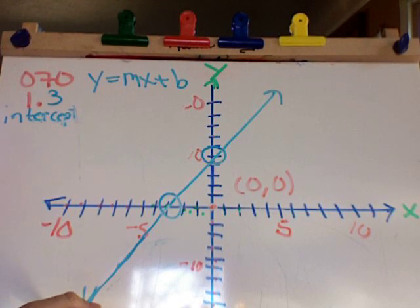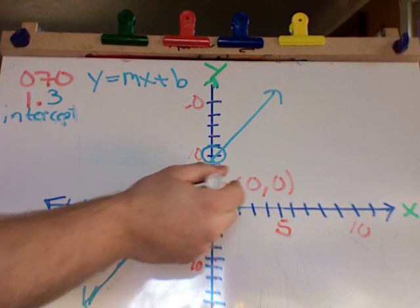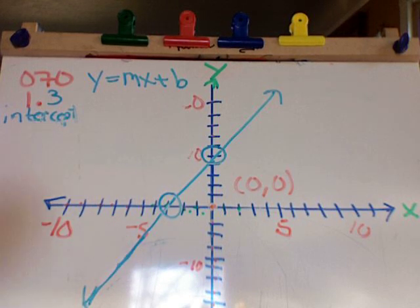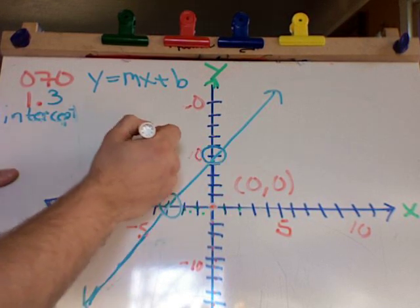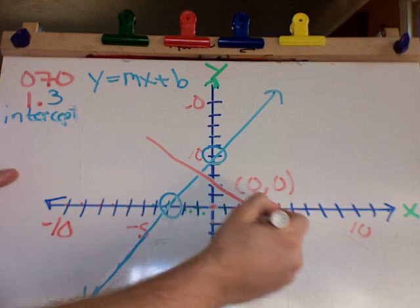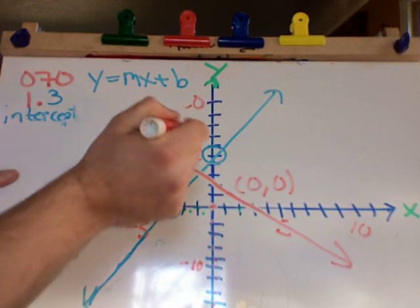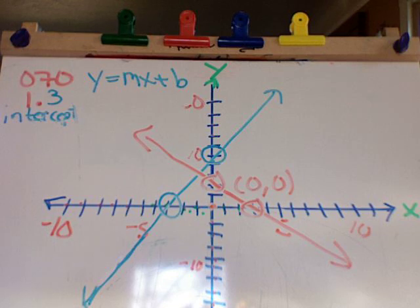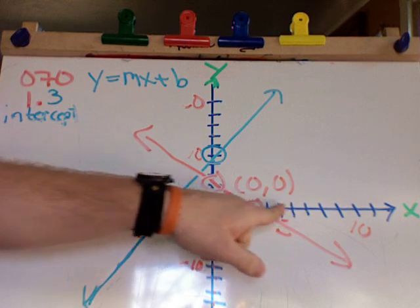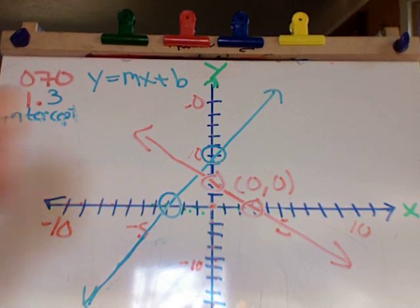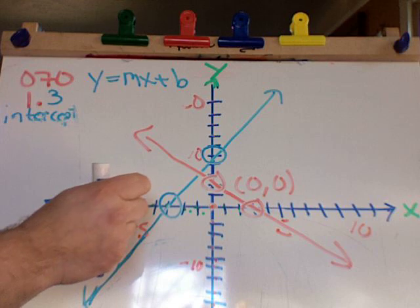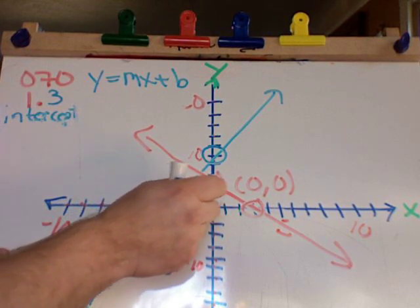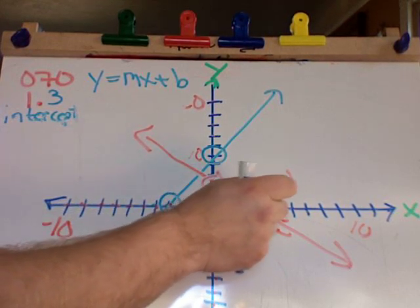Now, what's interesting is that whenever you have a line that crosses the y-axis or the x-axis, it has one data point in common. When I'm crossing the x-axis, what's my y value? No matter where I am on the x-axis, my y is zero.